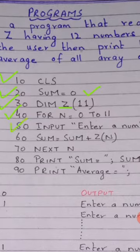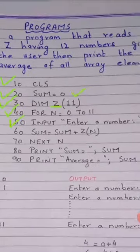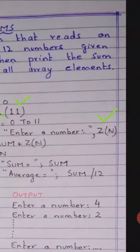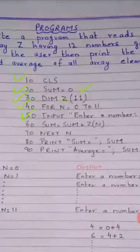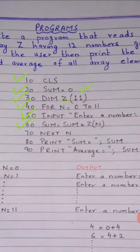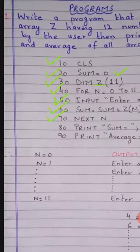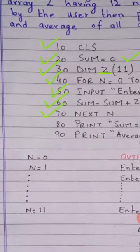Line number 50: sum is equal to sum plus z(n). Here we calculate the sum. Line number 70: for n is equal to 0 to 11. Now I will explain how to do this program — the processing will be as follows. For n is equal to 0 to 11.